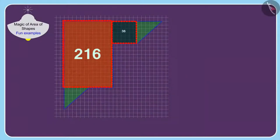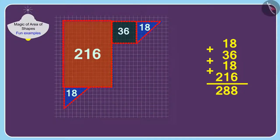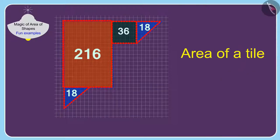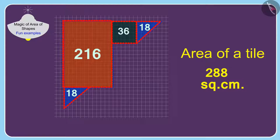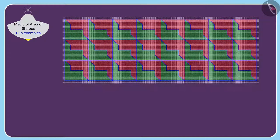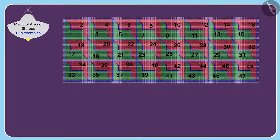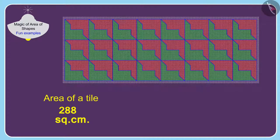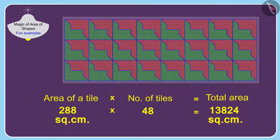First, we will find the area of a tile in this way. The area of a tile is 288 square centimeters. Banno has used a total of 48 such tiles to decorate the wall. Therefore, the area of the wall will be 288 multiplied by 48, 13,824 square centimeters.